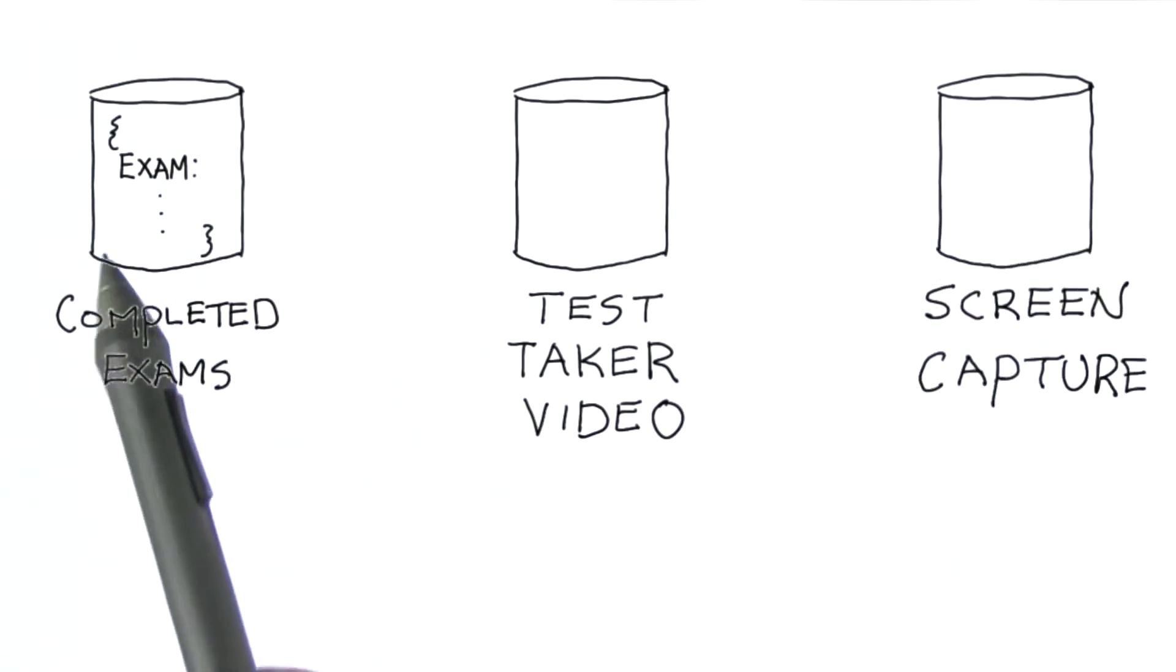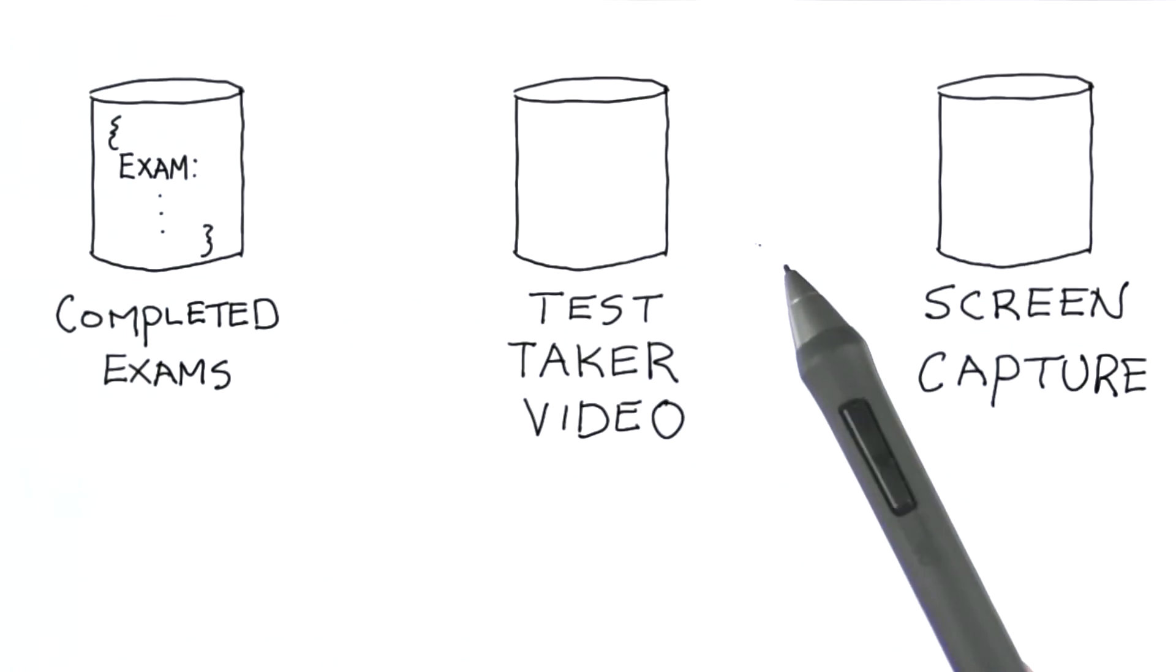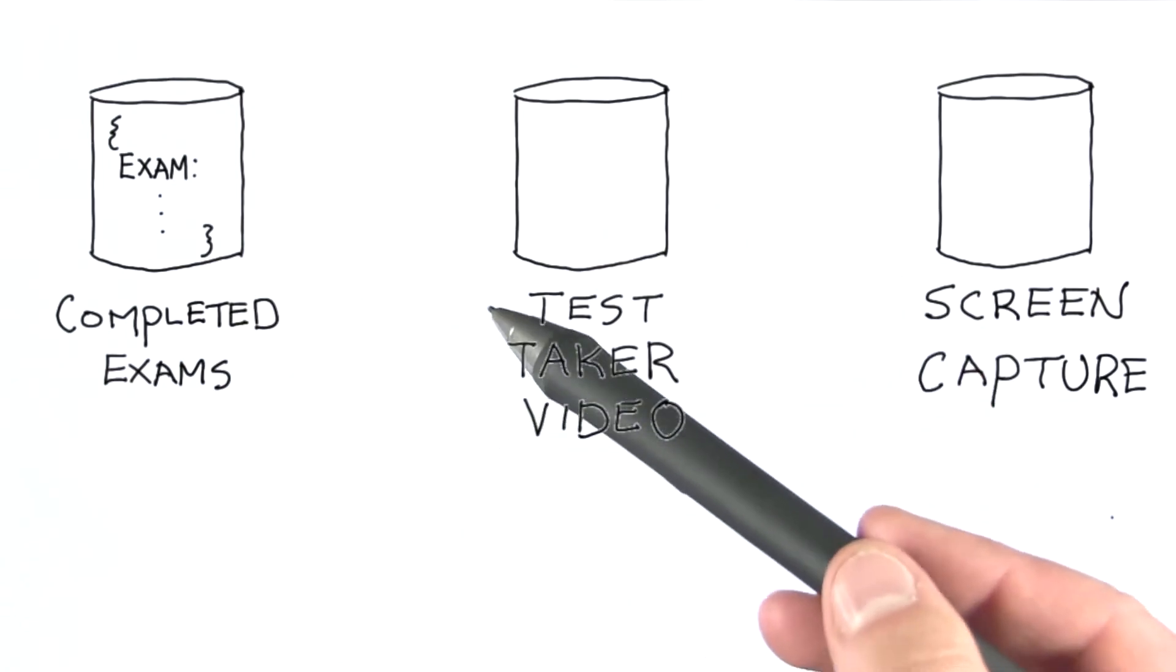What this means then is we have three separate data stores that need to agree with one another on a couple of different things. And here is where we get to the completeness example.